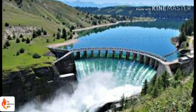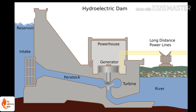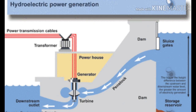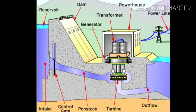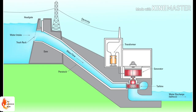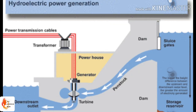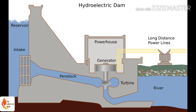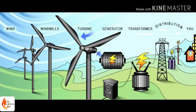Electricity generated from water is called hydroelectricity. Falling water rotates the blades of a hydroelectric turbine, which in turn moves the copper armature inside the electric generator to produce electricity. In hydropower plants, water is stored at a height, giving it high potential energy. When released, this potential energy converts into kinetic energy. This fast-moving water turns the turbine connected to the generator, generating electricity.